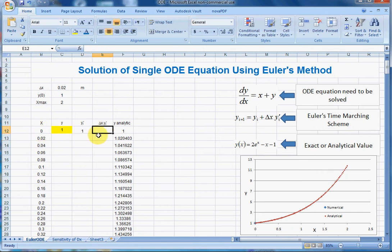So now I want to calculate delta x multiplied by di y by di x. Delta x is this term here. So it is a fixed value. So I will press F4 multiplied by di y di x.